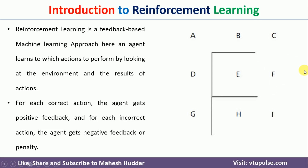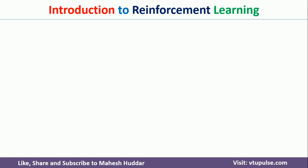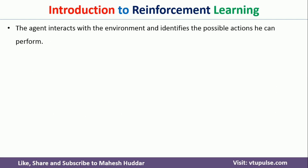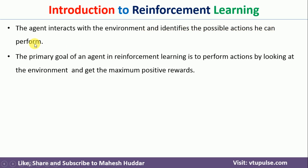That is how reinforcement learning works. The agent will interact with the environment, identify one of the possible actions, and perform that action. For each of those actions, he will be given a positive or negative feedback in terms of rewards. The main goal is to get the maximum rewards as much as possible.